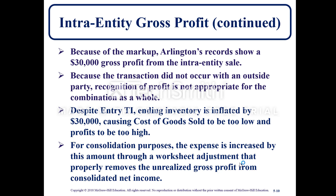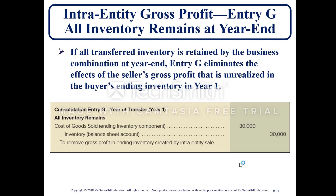Because the transaction did not occur with an outside party, recognition of profit is not appropriate for the combination as a whole. Despite entry TI, the inventory is inflated by $30,000, causing cost of goods sold to be low and profits to be high. For consolidation purposes, the expense is increased by this amount through a worksheet adjustment that properly removes the unrealized gross profit from consolidated net income. This is the intra-entity gross profit entry, which is entry G.